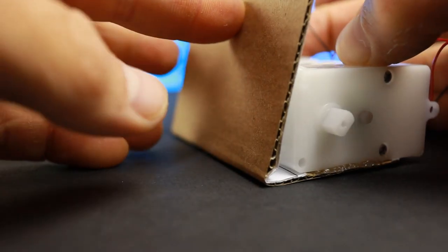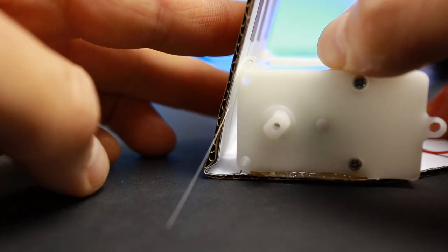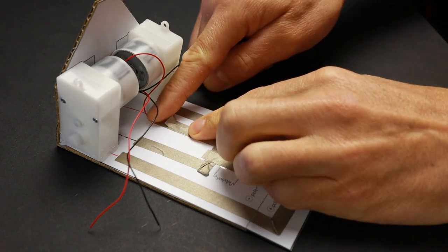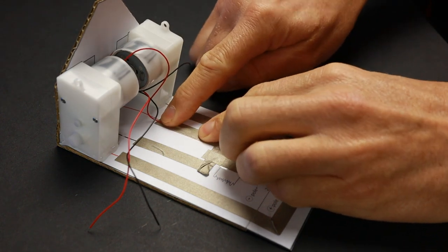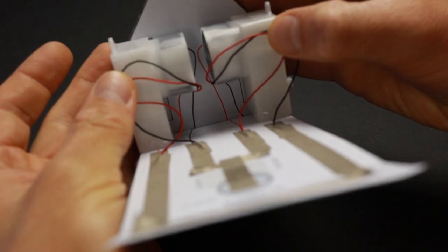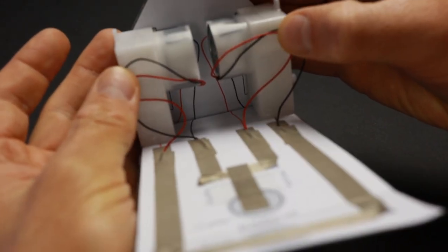There should be a slight backwards angle in the chassis. Now attach the wires from the motors to the circuit with short strips of conductive tape. The two wires from the left motor go to the left tracks and the two wires from the right motor go to the right tracks.